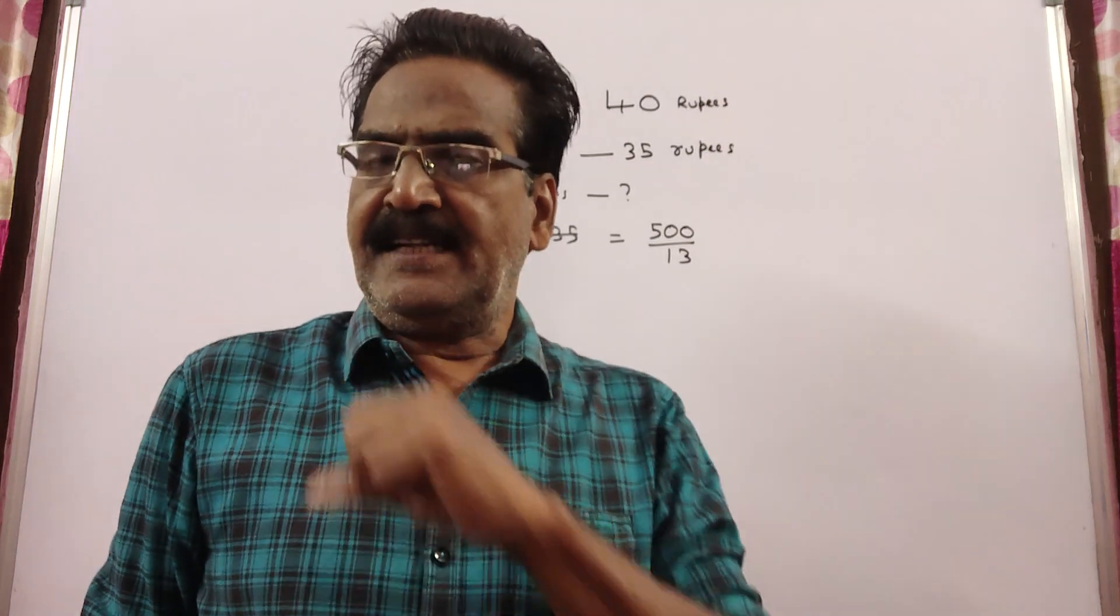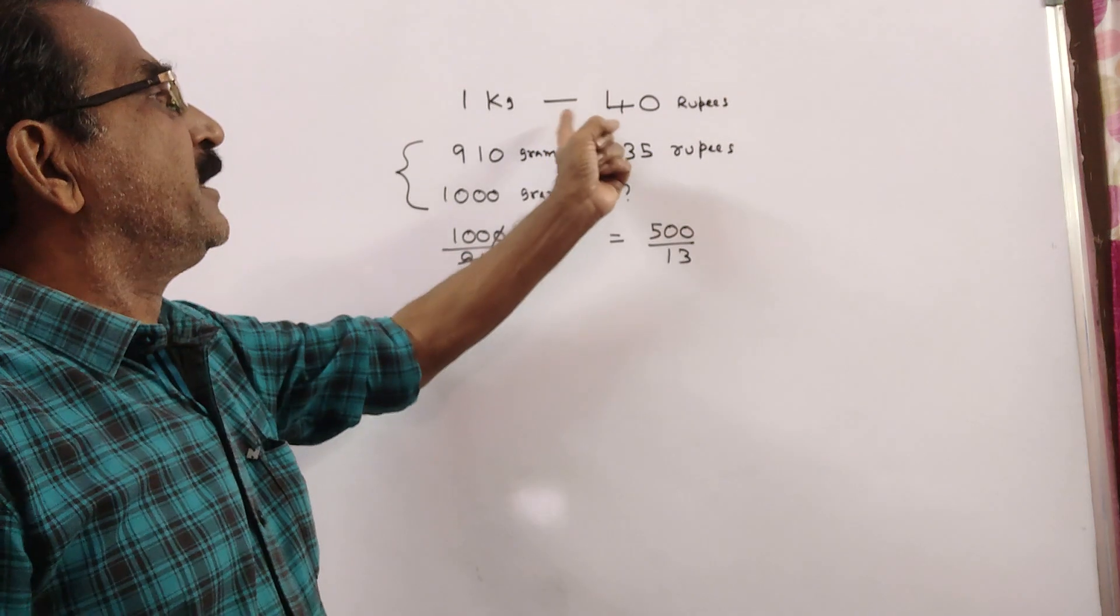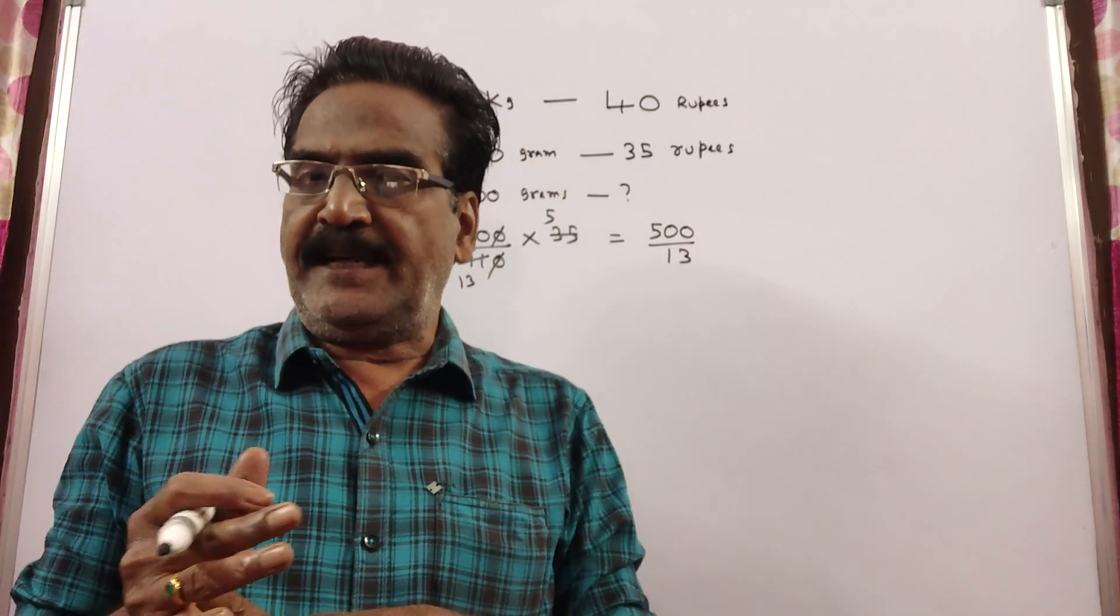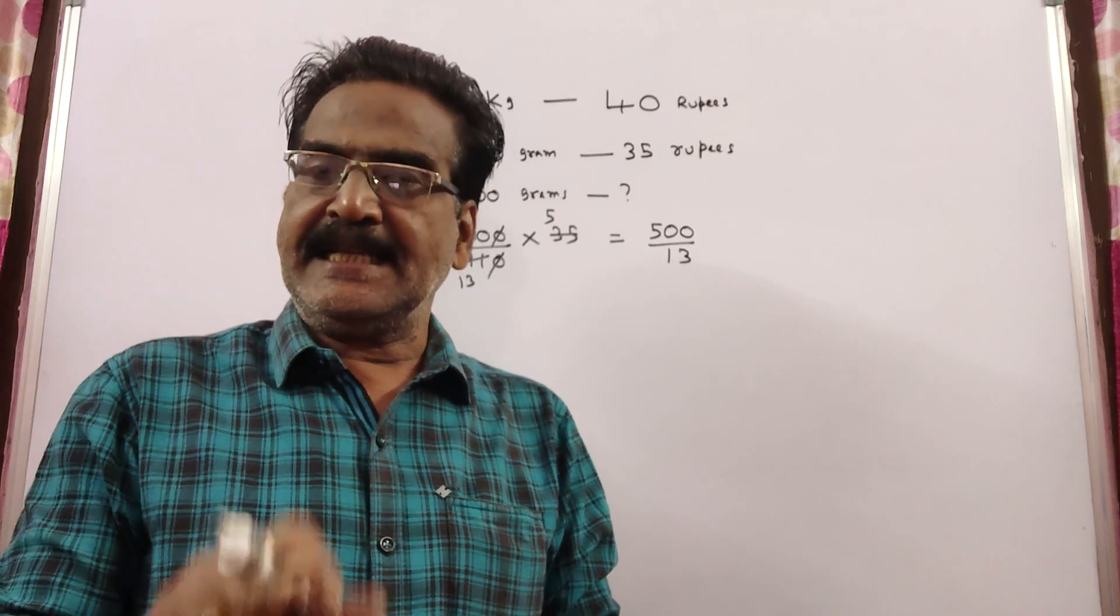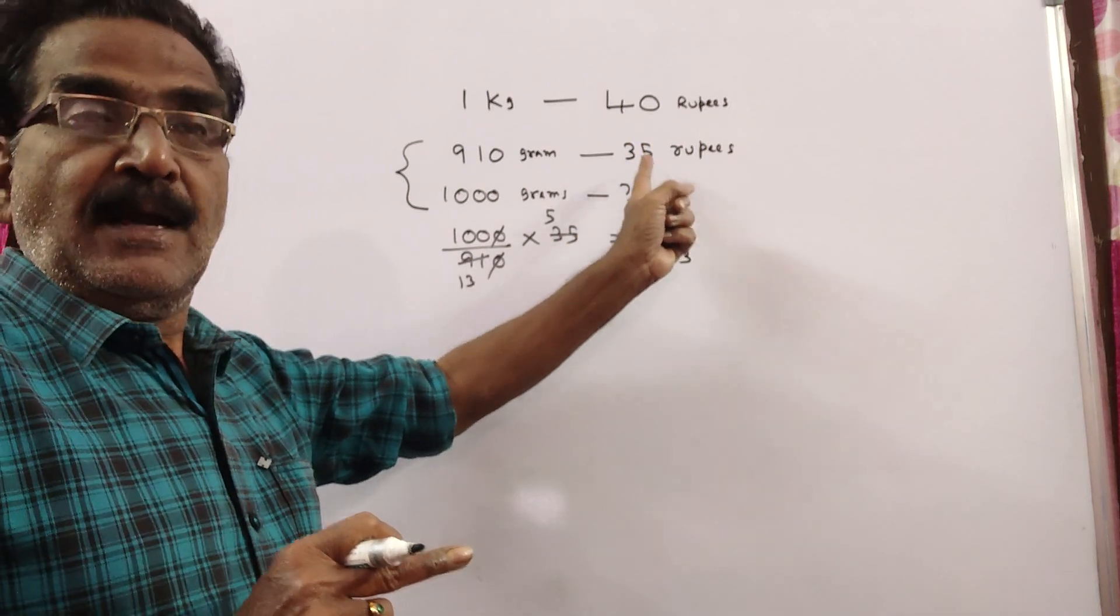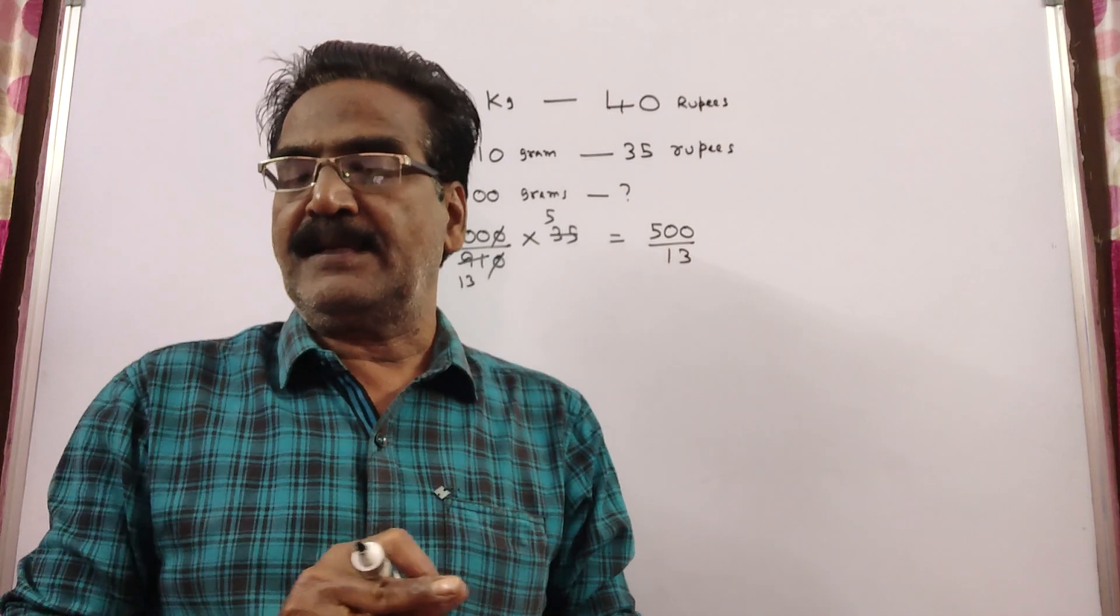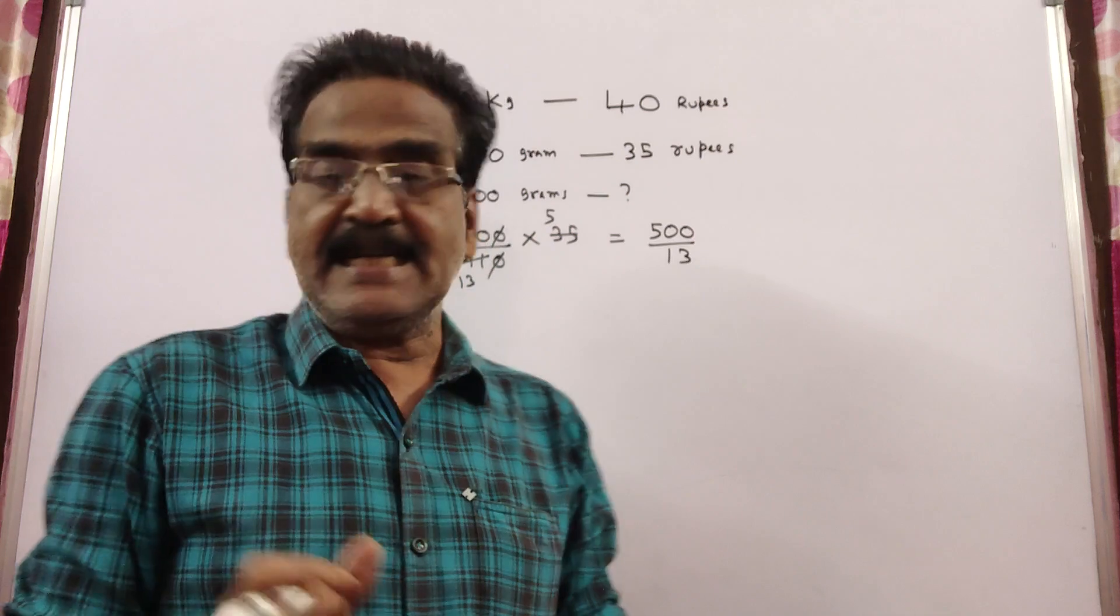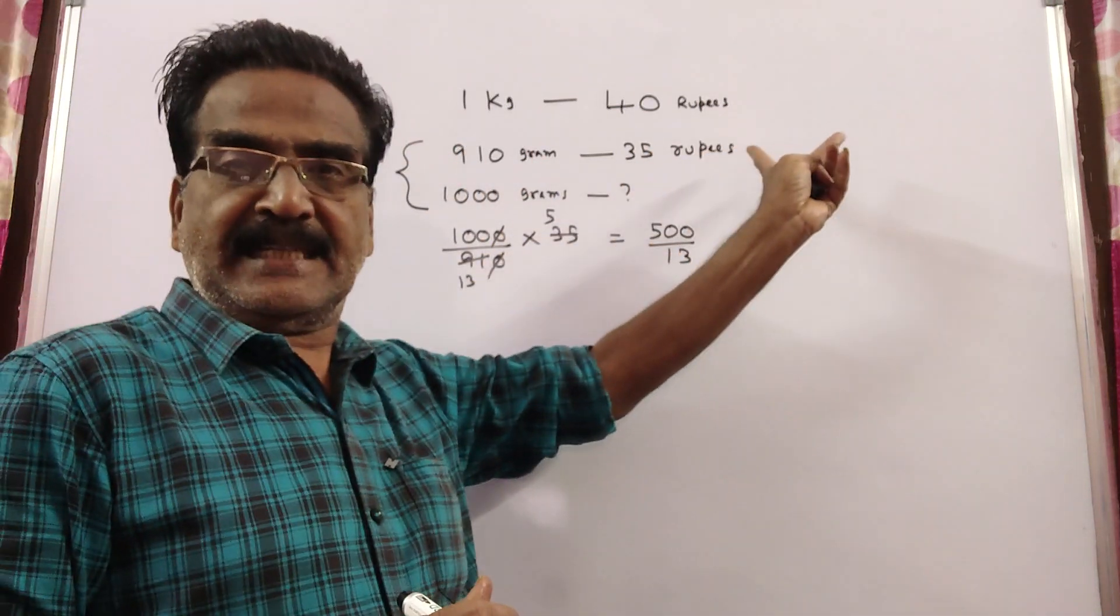See friends, a vendor has fixed the rate of a vegetable at 40 rupees per kg. But he could not find the buyers and hence he decreased the price to 35 rupees and by using a faulty weight of 910 grams per kg. That means he is selling 910 grams per 35 rupees.